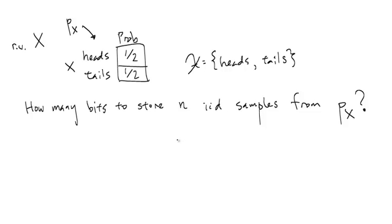The question we want to ask is, how many bits does it take to store n independent and identically distributed samples from the distribution px? You can think of these n-iid samples as we're just flipping the coin n times. One way to think about this is to break it up into cases. And to first start with, how many bits does it take to just store those samples that are heads? First off, how many times do we see heads? Well, if n is large, then we know that the number of heads we'll see is going to be approximately n times the probability of heads.